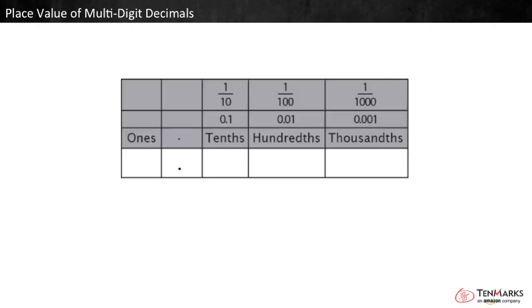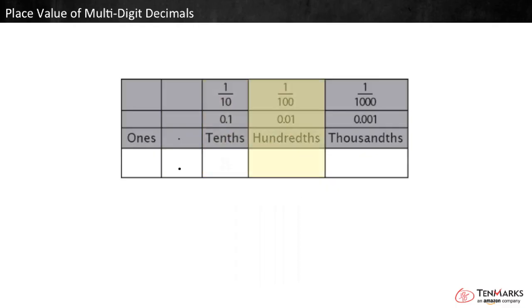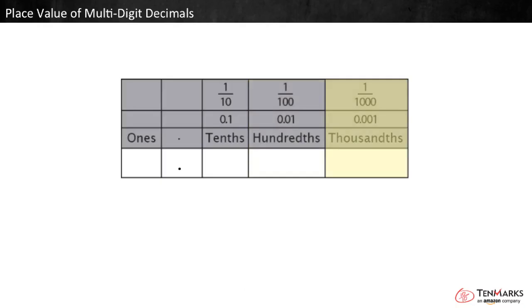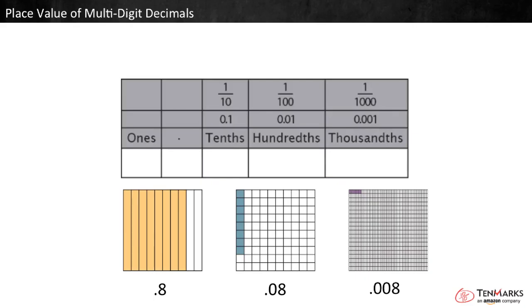Let's look closely at place value in decimal numbers. The decimal point comes after the ones place. The place to the right of the decimal is the tenths place — an 8 in this place is worth eight tenths. The next place is the hundredths place, where an 8 is worth eight hundredths. The next is the thousandths place, where an 8 is worth eight thousandths. Notice that the value of the 8 keeps getting smaller as it moves to the right.